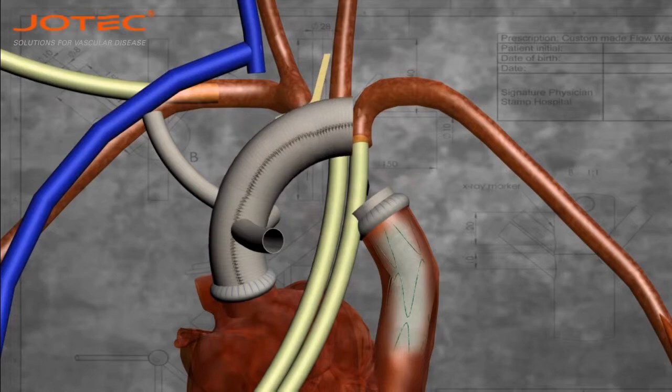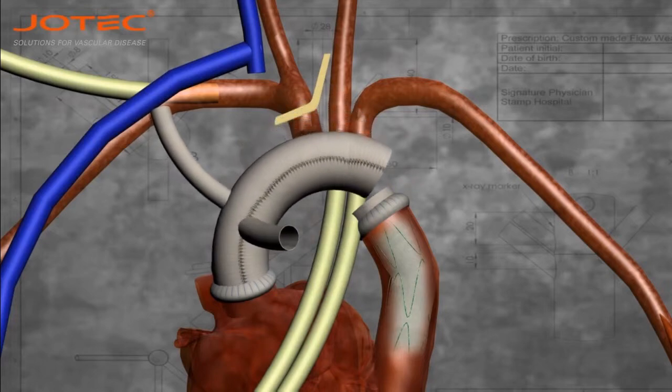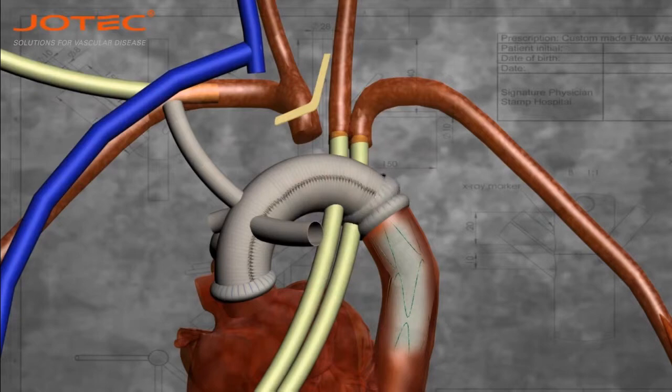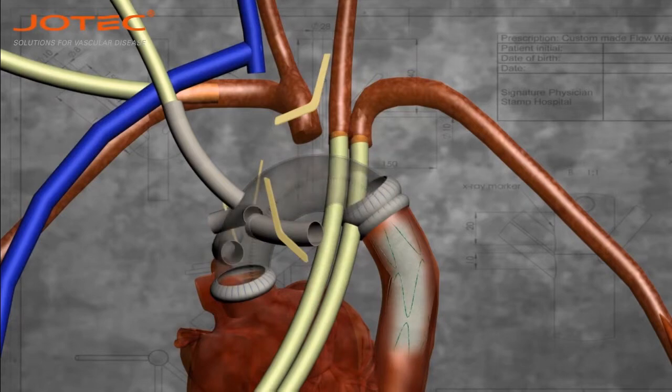Distal anastomosis between the GPE and the stent graft with 3-0 polypropylene sutures. Cannulation through the perfusion branch of the vascular prosthesis.